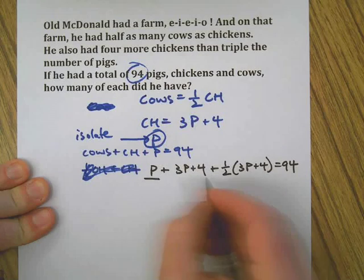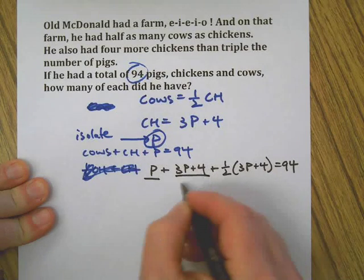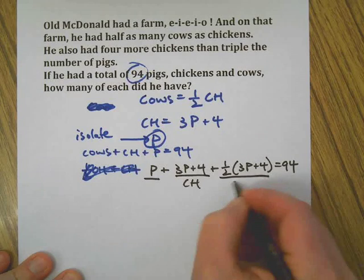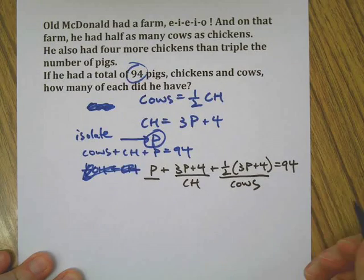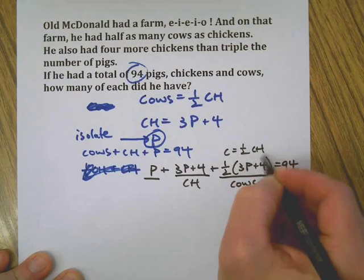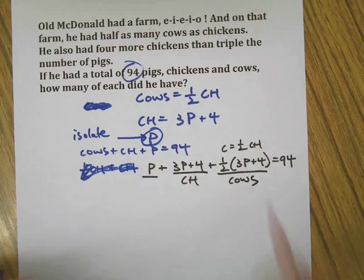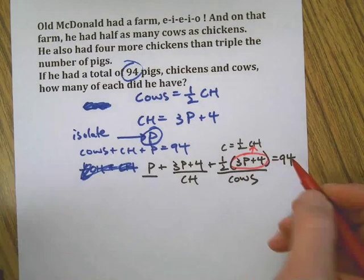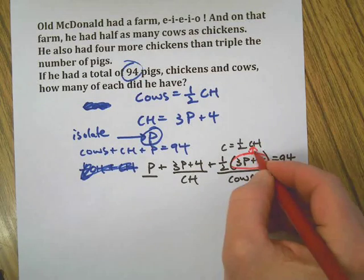And this is cows, because remember, cows were half the number of chickens, and chickens were 3P + 4. So I can substitute those two things. So now cows are actually one-half of 3P + 4. That and that are equal—this says so right there.